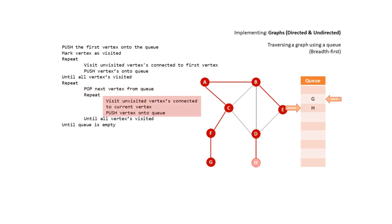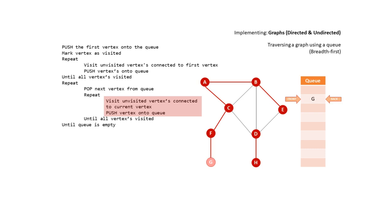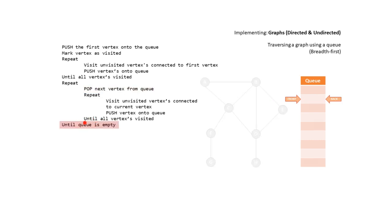We pop from the front of the queue and we're now at H. There are no unvisited vertices connected to H. We pop again, and we're now pointing at G. Note that at this point both the front and back pointers are pointing at the same location. We visit any unvisited vertices connected to G — there aren't any. We pop G off the queue. Finally, the queue is empty, and we can guarantee that we've visited all vertices in this graph using the queue data structure.